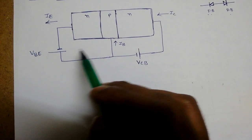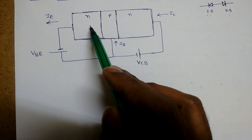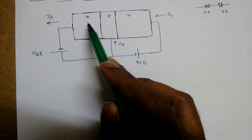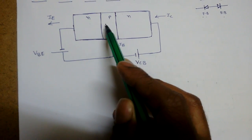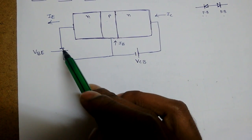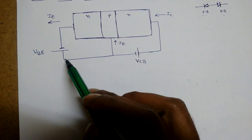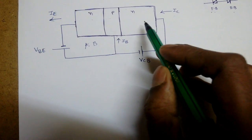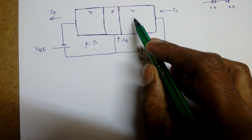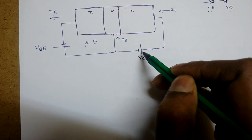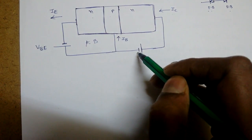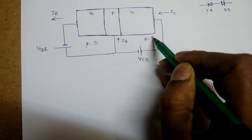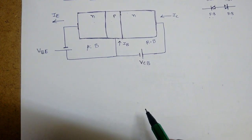For an NPN transistor, whenever the emitter-base junction is forward biased, the N side should be connected to negative and P should be connected to positive. Similarly, for the collector-base junction, the collector is N, so N should be connected to positive and P to negative — then only this junction will be in reverse bias.